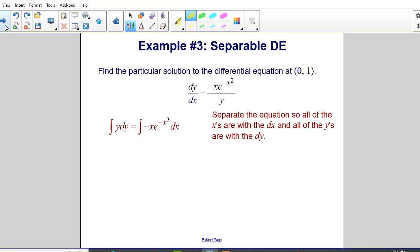So we separate the equation so all the x's are with the dx and all the y's are with the dy. So I cross multiply both sides by dx and I also multiply both sides by y. And that's how I obtain the integral of y dy is equal to the integral of negative x times e to the negative x squared times dx.